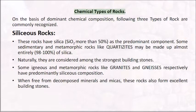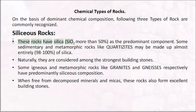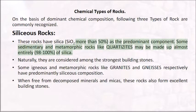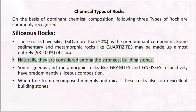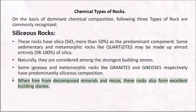Chemical types of rocks: on the basis of dominant chemical composition, three types of rock are commonly recognized. Siliceous rocks have silica (SiO2) more than 50% as the predominant component. Some sedimentary and metamorphic rocks like quartzites may be made up almost entirely (98 to 100%) of silica, and are considered among the strongest building stones. Some igneous and metamorphic rocks like granites and gneisses respectively have predominantly silica composition; when free from decomposed minerals and micas, these rocks also form excellent building stones.